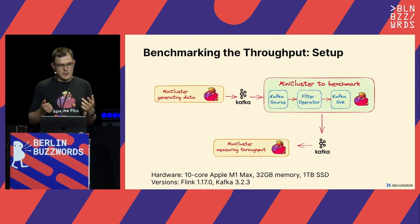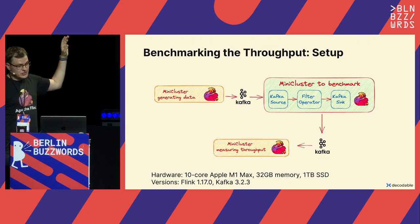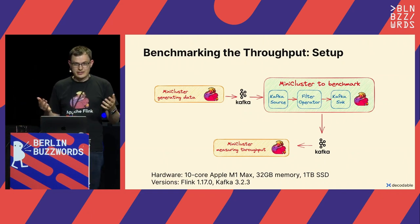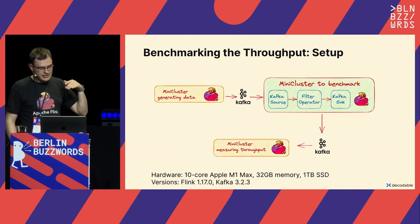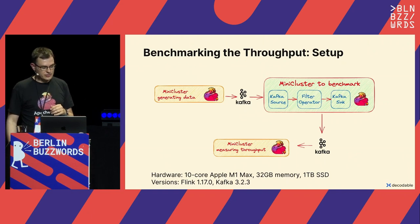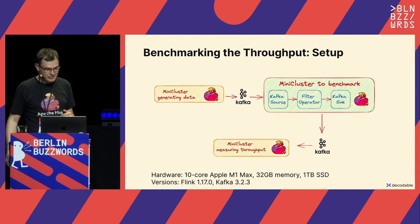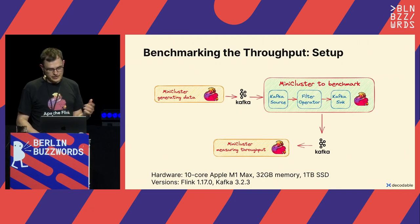For the benchmark, I'm running three mini clusters. The top-left one generates data to Kafka. Then there's the mini cluster under benchmark running this simple Flink pipeline, writing again to Kafka. A final mini cluster measures how fast data is being written to the Kafka cluster. I'm running this on this MacBook, so it's not a very professional benchmarking setup, but it gives a rough indication of what to expect from such a small Flink process on a single machine.